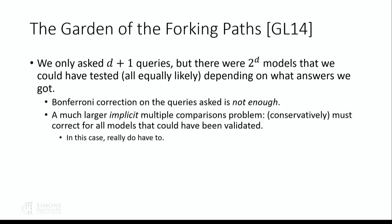The problem is that we applied the Bonferroni correction to the D+1 questions we actually asked — the particular path we took — but there were a vastly larger number of models we could have checked: 2^D. To be safe, we would have had to apply the Bonferroni correction to all 2^D models we might have asked. This is what Gelman and Loken call the implicit multiple comparisons problem: you have to correct not just for the questions you actually asked, but for all questions you might have asked had the answers come out differently.